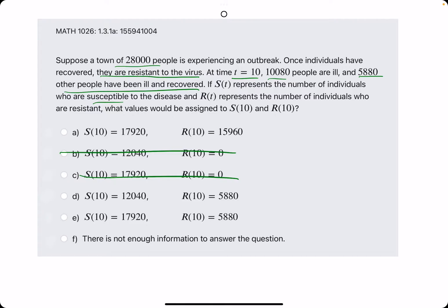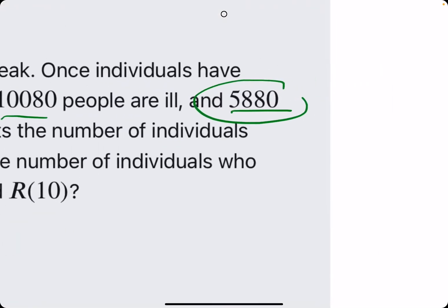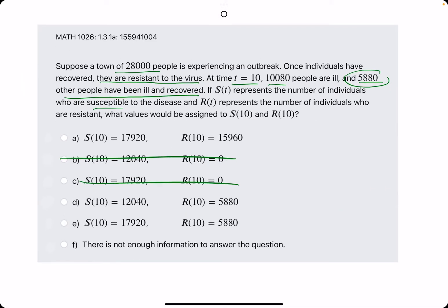The number of people who are resistant must be the people who have already been ill and recovered, because it says once they recover, they are resistant. So the number of people who have been ill and recovered is 5,880, meaning R(10) = 5,880. We can eliminate option A.